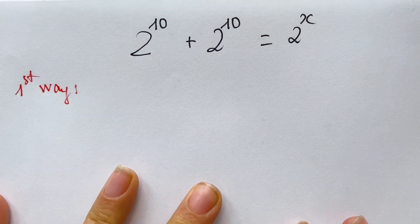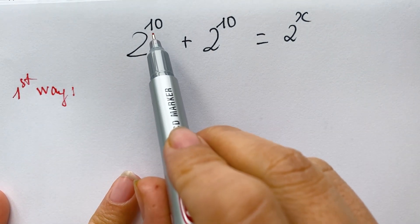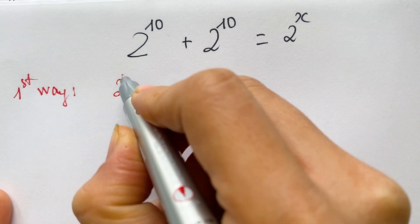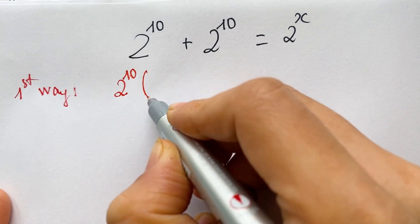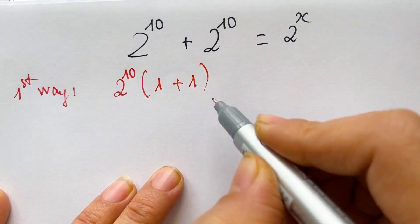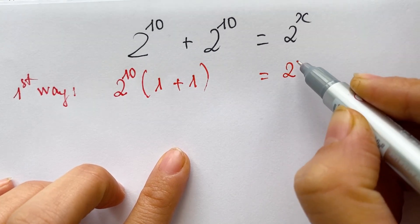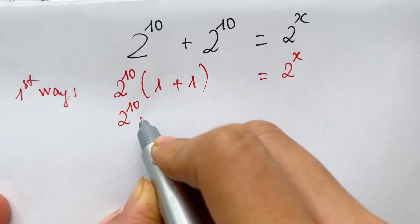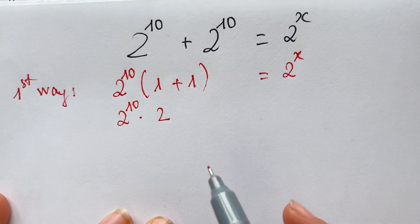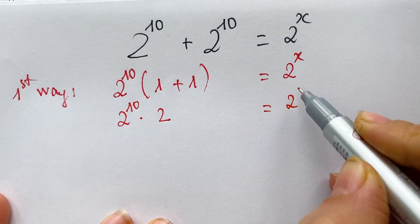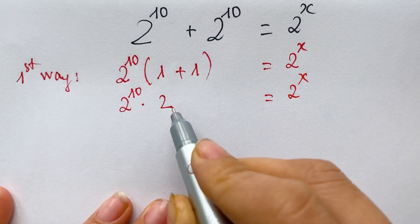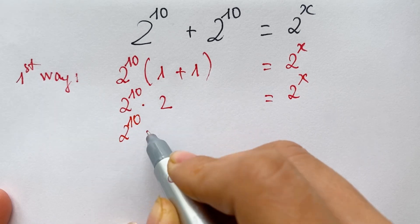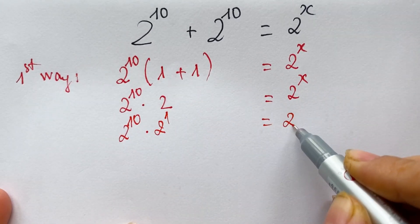Everyone, see that 2 power 10 is the common factor on the left-hand side. So we have 2 power 10 times brackets 1 plus 1, which is equal to 2 power x. Next, 2 power 10 times 2 — and look at that 2, which equals 2 power 1.